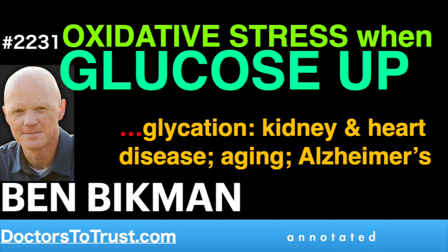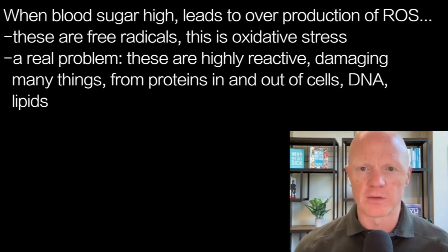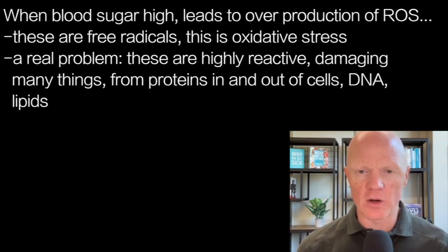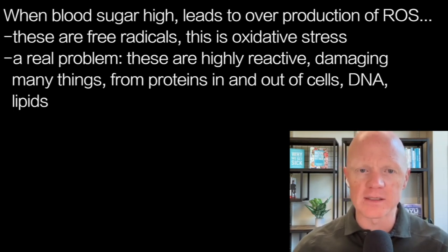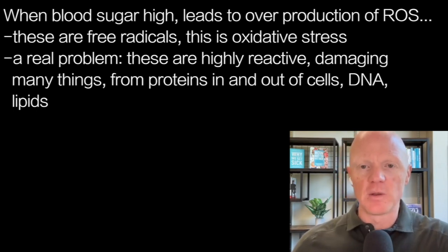The next point I want to make is oxidative stress, and this is a major consequence of hyperglycemia. When blood sugar — synonymous with blood glucose — is high, it will lead to an overproduction of reactive oxygen species, or ROS. These are free radicals you've heard of. Oxidative stress just means you have cells that are making more reactive oxygen species.